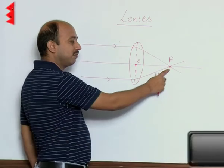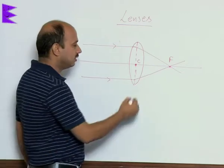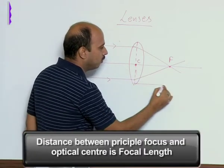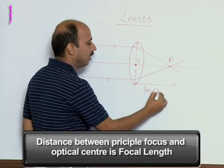This is the principal focus and this one is optical center. The distance between this principal focus and optical center is known as focal length.